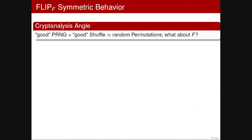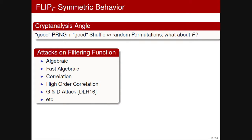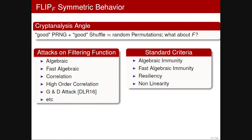From a symmetric security perspective, we assume the permutation behaves as a random permutation if the PRNG and shuffle are good enough, and focus on the security of function f. We consider attacks on filtering functions studied over past decades — algebraic attacks, correlation attacks, and guess-and-determine attacks as shown by Duval, Lallement, and Rotella. For all these attacks, we measure robustness using standard criteria: algebraic immunity, resiliency, and nonlinearity.